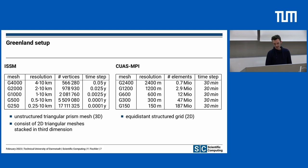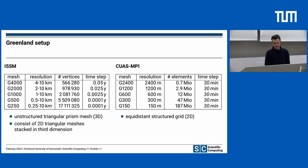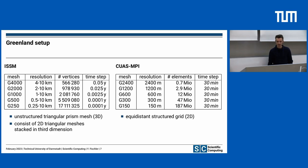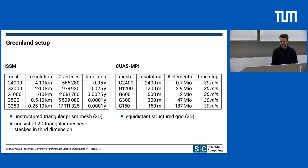On the other hand, CUAS-MPI has an equidistant structured grid with a minimum resolution of 150 meters. As Greenland is very large, we have 187 million elements here. Using 187 million elements in preCICE will become quite interesting.